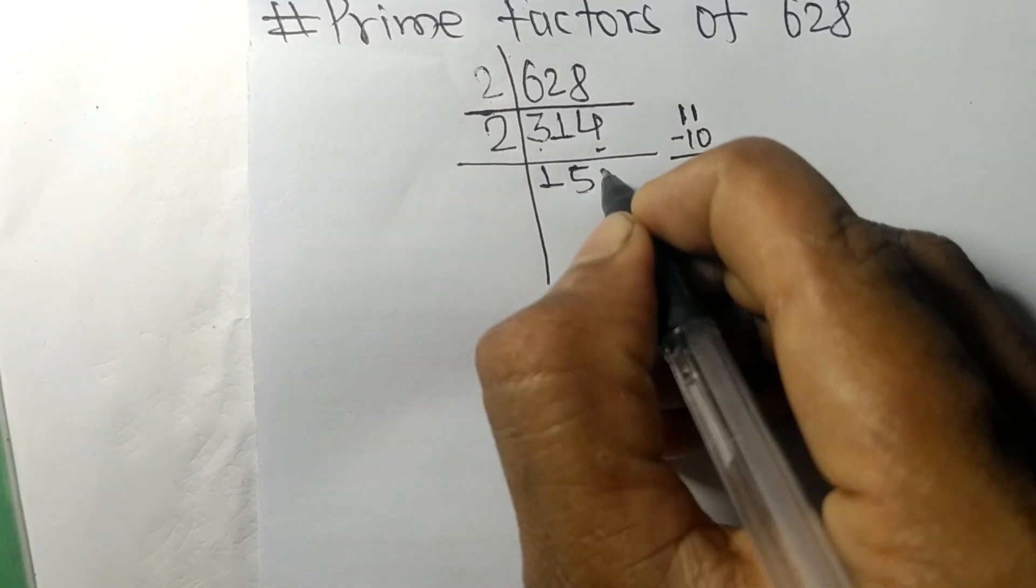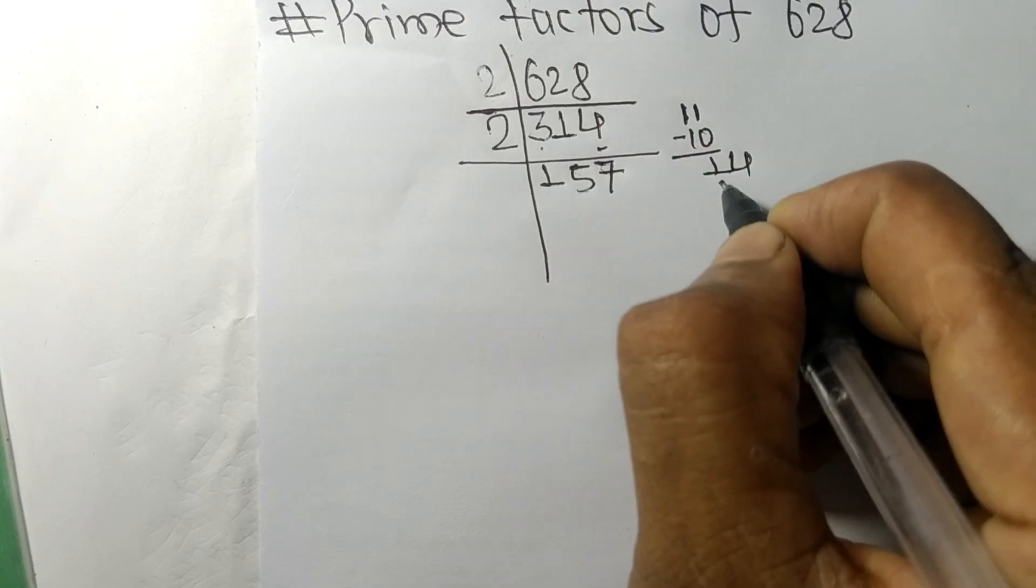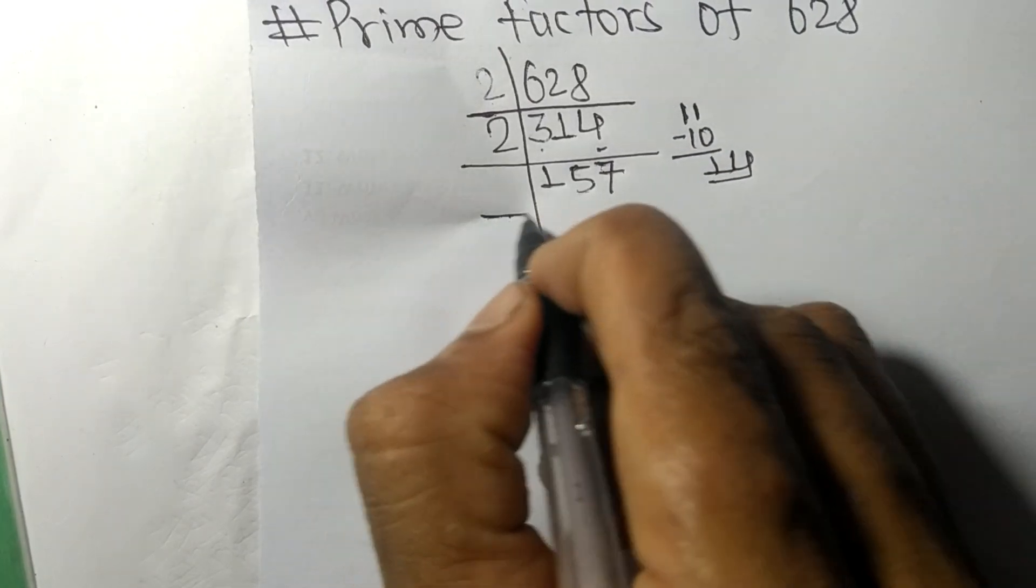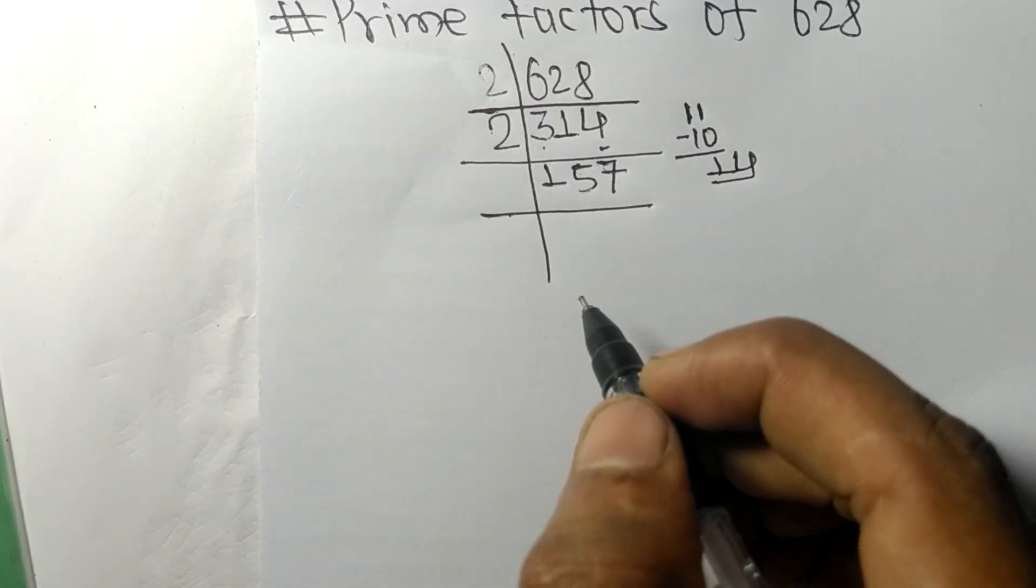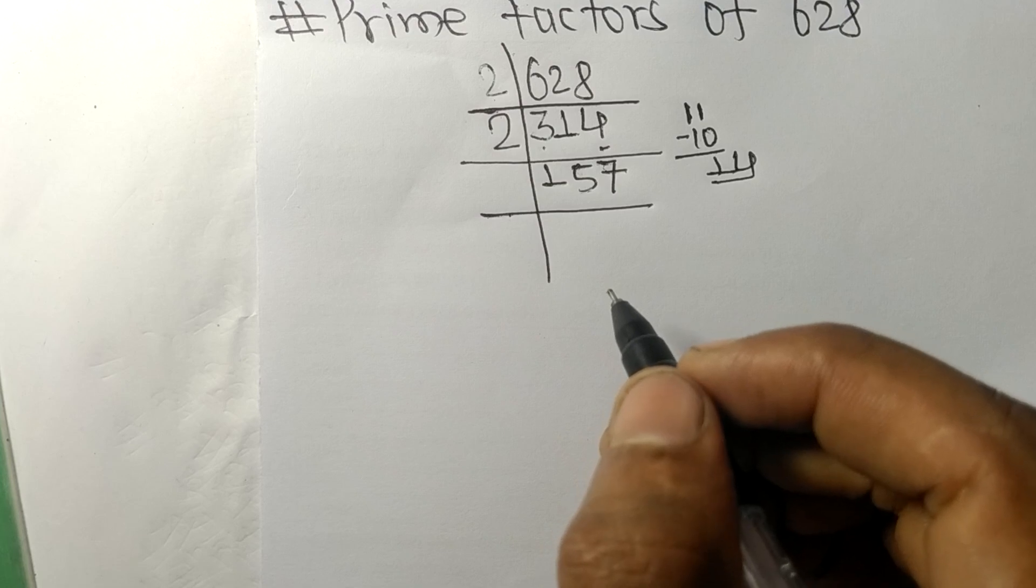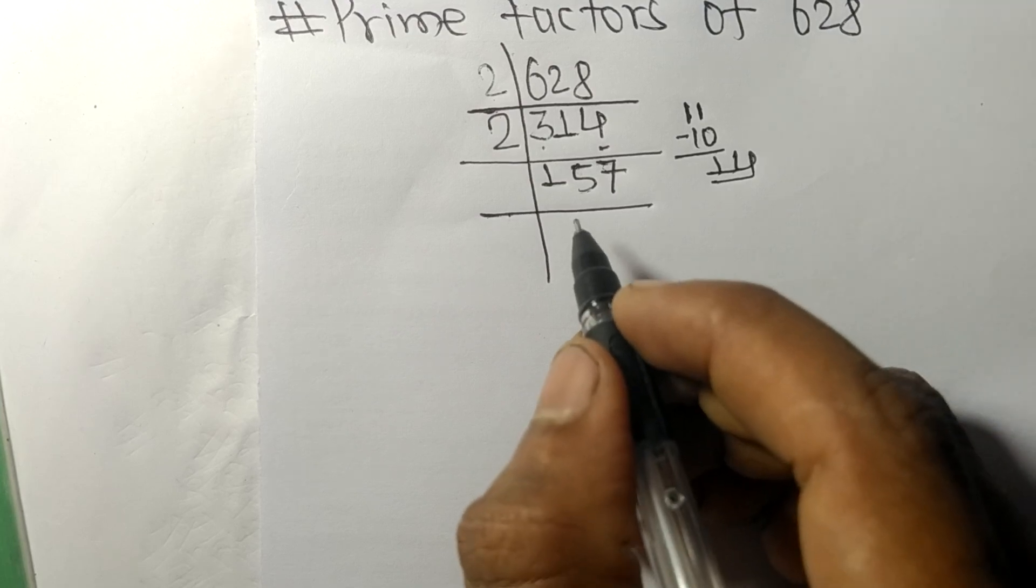2 times 7 means 14. Now we got here 157 which is our prime number.